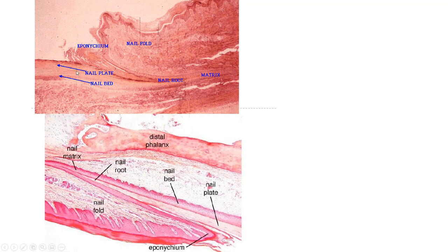Looking at the nail anatomy: the nail goes this way, and the surface you would look at is the nail plate. It lies on the nail bed. The root is in here, the matrix is here — this is where the cells divide and push out. The eponychium or cuticle is here.